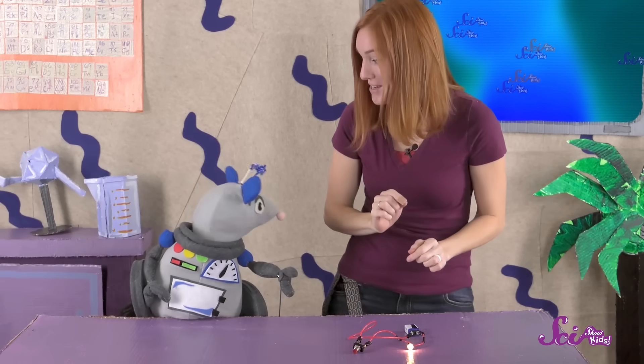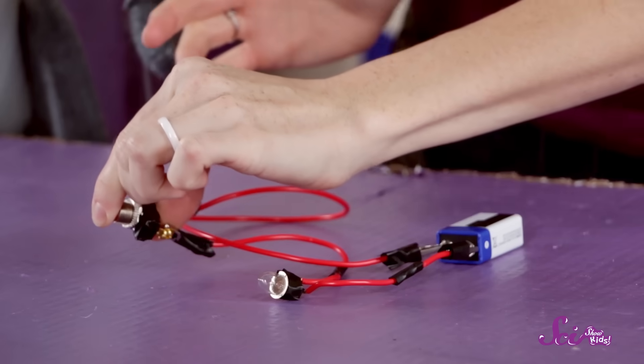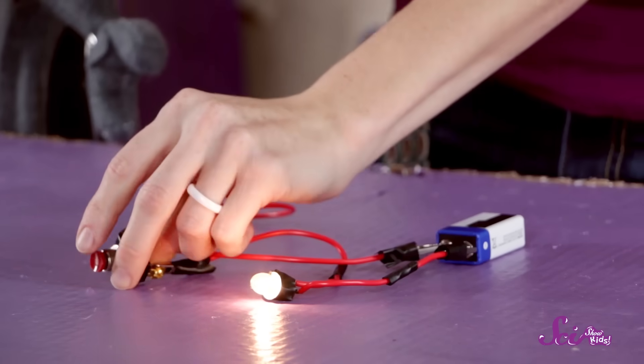Okay, Squeaks, let's press the button and see what happens. Hey, the light bulb went off! That means when I press the button, the circuit is incomplete, which means that I've created a space. And when I let go of the button, the circuit is complete again.